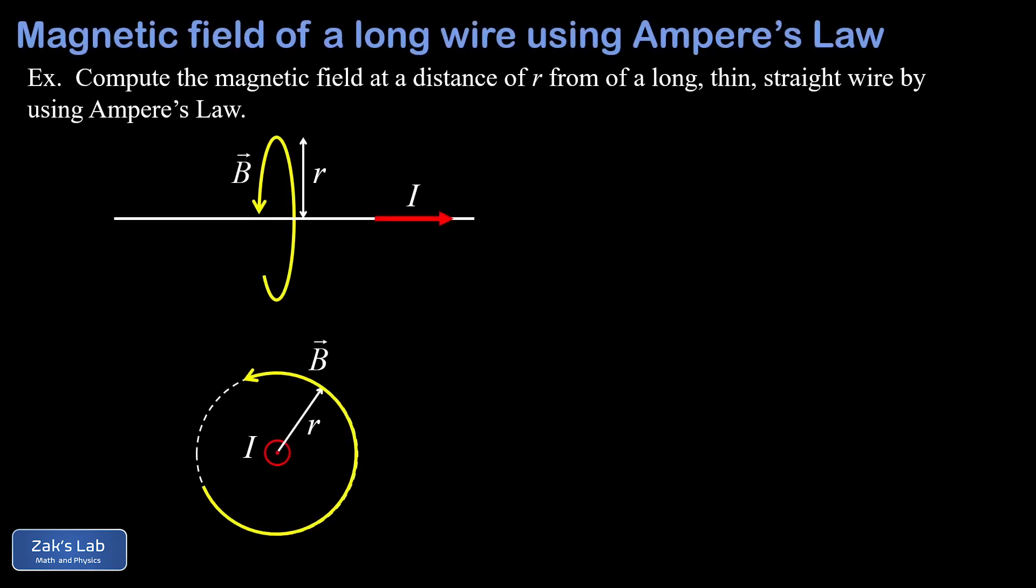In this video, we solve the simplest possible application of Ampere's law, and that's the magnetic field due to a long, thin, straight wire carrying a current I, where we're computing the field at a distance R from the wire.